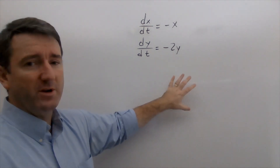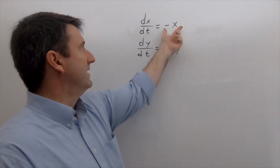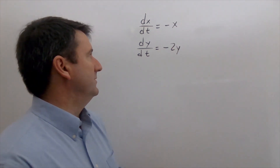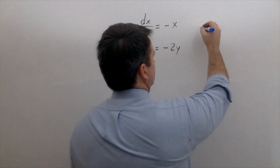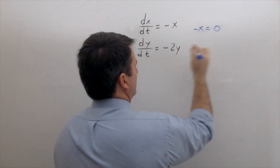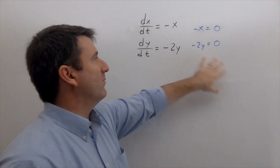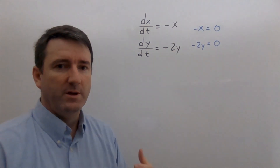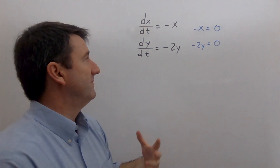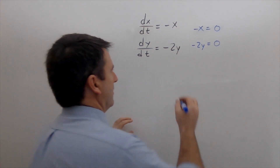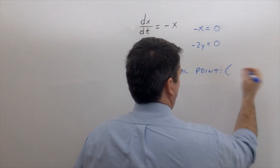We're going to first find the critical points. A critical point is a point where each of these functions are equal to zero simultaneously. So we set negative x equal to zero and negative 2y equal to zero, and solve that system. The only place where both are zero is where both x and y are equal to zero, so our critical point is at the origin, (0, 0).